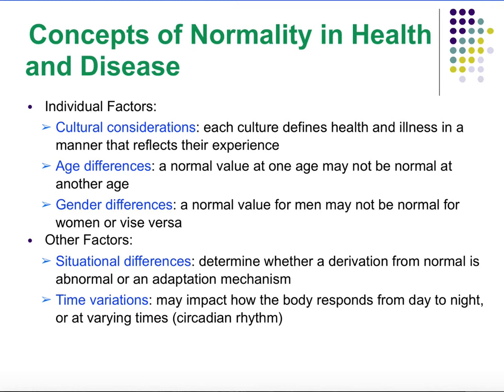There are also gender differences, so normal values in men may be different than in women. Other factors include situational differences — looking at whether we are adapting to some abnormal situation, and that's why certain things are manifesting. Take a look at the overall story, not just values. And then time variation may impact how the body responds from day to night; we know about circadian rhythm and how our body has an internal clock. These are things we have to be aware of as well.